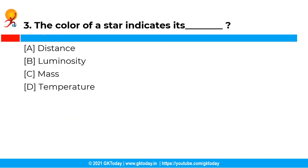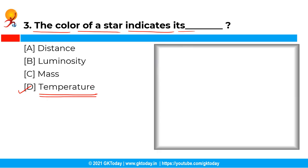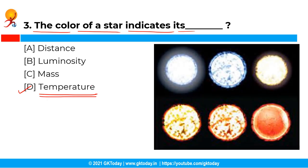The next question: the color of a star indicates its what? The correct answer is Option D, i.e. temperature. The color of a star indicates temperature, much like the color of fire indicates temperature. So a star's color is proportional to its temperature.